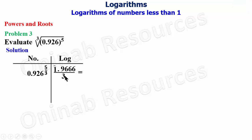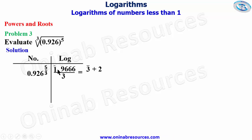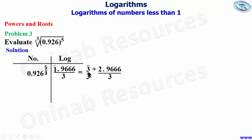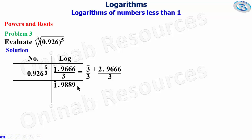Since bar 1 is not exactly divisible by 3, we use bar 3 instead — because bar 3 is exactly divisible by 3. We ask: what do we add to bar 3 to give bar 1? That is 2. So we add 2 to bar 3 to get bar 1, bring in the other digits 0.9666, then divide each component by 3. Bar 3 divided by 3 gives bar 1. Dividing 2.9666 by 3 to four decimal places gives 0.9889, so we have bar 1.9889.